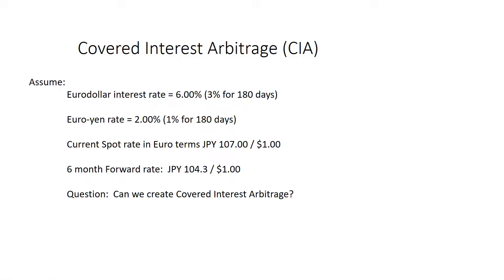Let's say that the current spot rate — and I say in European terms, that means foreign currency units per $1. If I call it American terms, it's dollars per one foreign currency unit. European terms is when there's foreign currency units per dollar, and that's how the yen is typically expressed. The current spot rate is 107 yen per dollar. Let's say that the forward rate is 104.3 yen to the dollar. You can see right away that the yen is trading at a premium in the forward market — it takes fewer yen to buy dollars six months forward than it does today in the spot market. So the yen is actually strengthening in the forward market.